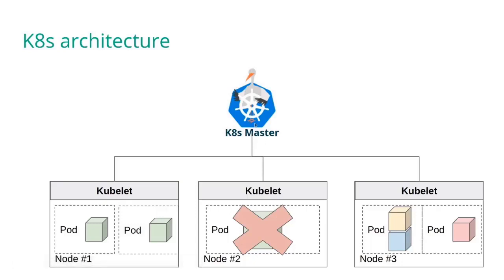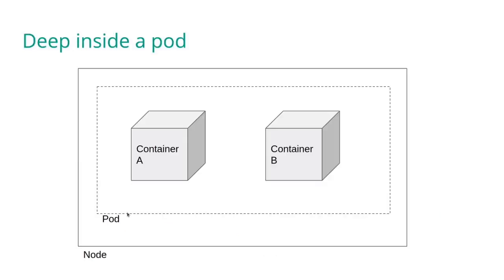The kubelet informs the master, and the master will spawn the pod instantly to another node where there are free resources. Inside a pod, which is a runtime container that can contain one or more containers, all containers share the same IP, the same network ports, and other resources of the pod. Another important concept is volume sharing — a storage space accessible to all containers in a pod.